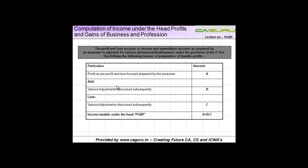Computation of income under the head profits and gains of business and profession. Let me give you a brief background. Till now, what we have seen is what are the various incomes which are chargeable to tax under this head. Now, once you've identified those incomes, what you need to do is deduct the relevant expenses that you have incurred in connection with earning that income.